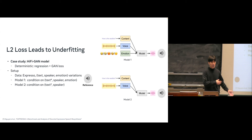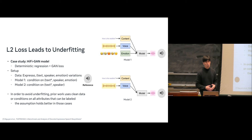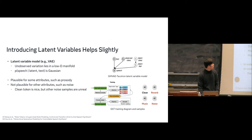This kind of problem also translates to other models, producing overly smooth tone, prosody, or background noise. One workaround is to use cleaner, more monotonic data to better fit the probabilistic assumption, or provide as much conditioning information as possible to simplify the mapping. But these techniques don't really solve the core problem — the model cannot generate unspecified variation.